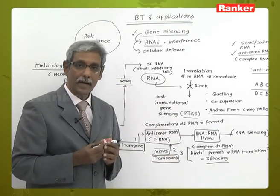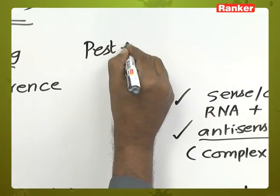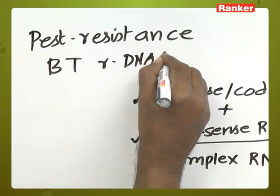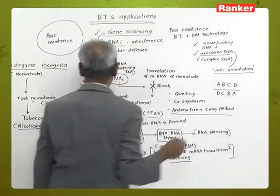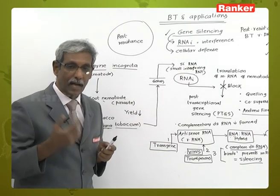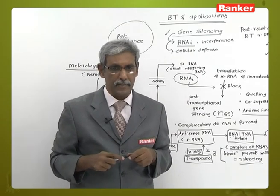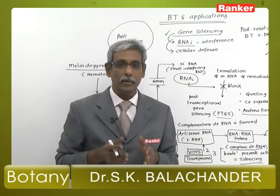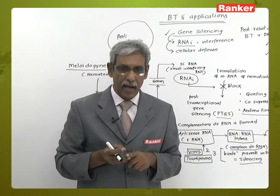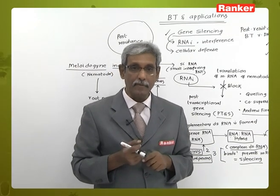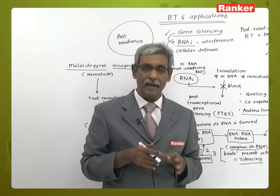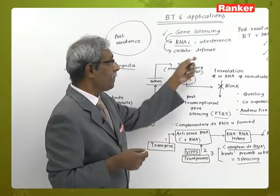Gene silencing is one very important method of pest resistance using the principles of biotechnology and recombinant DNA technology, as seen in tobacco against nematode infection. RNAi or interference is a method of cellular defense naturally present in cells. We develop a pest-resistant plant by ensuring there is no translation or protein synthesis from the nematode's mRNA — and because there is no translation, there is no toxicity. Thereby the tobacco plant is self-protected from the parasite, the parasite cannot survive in the transgenic plant, and the plant is protected from pests.